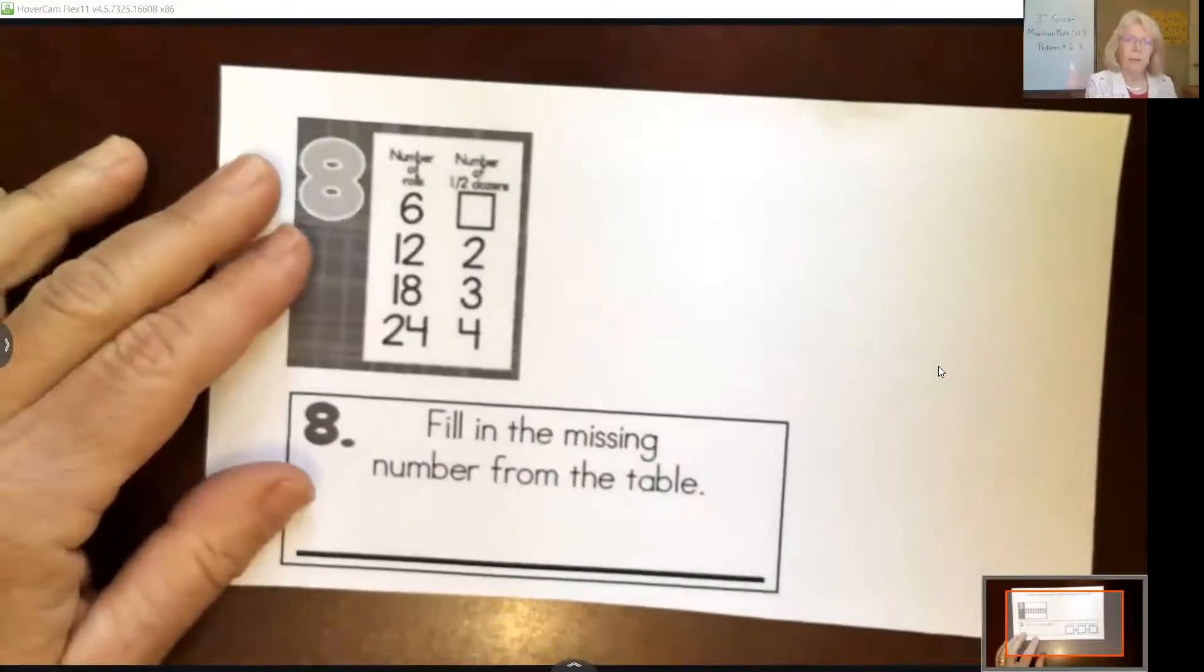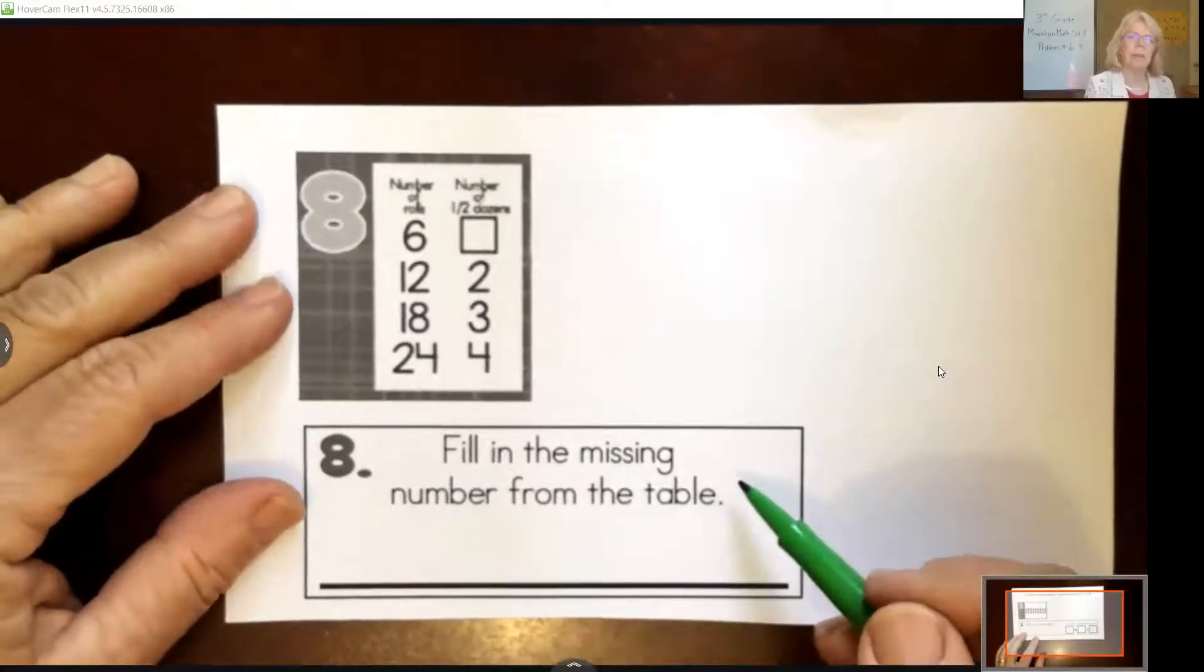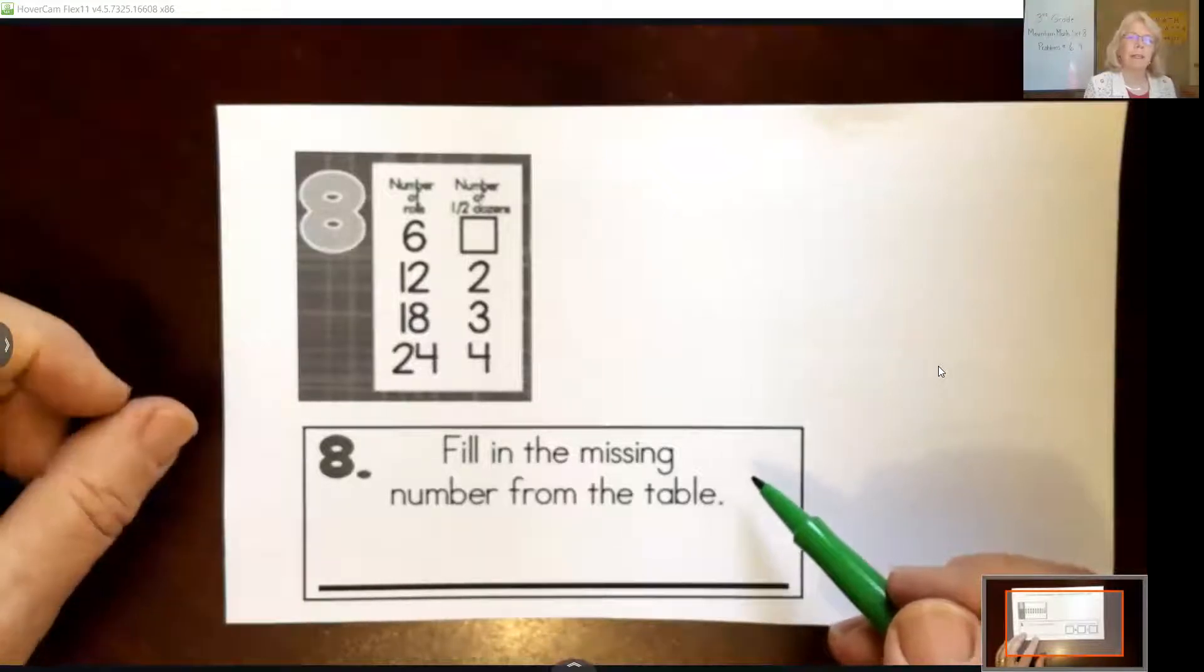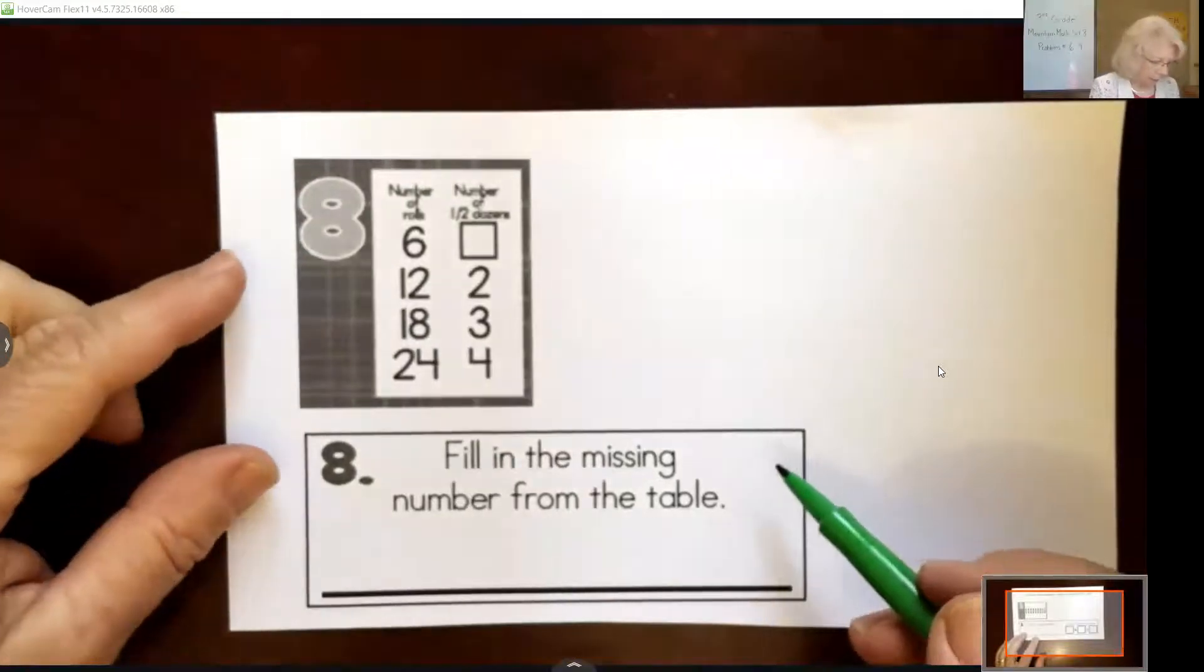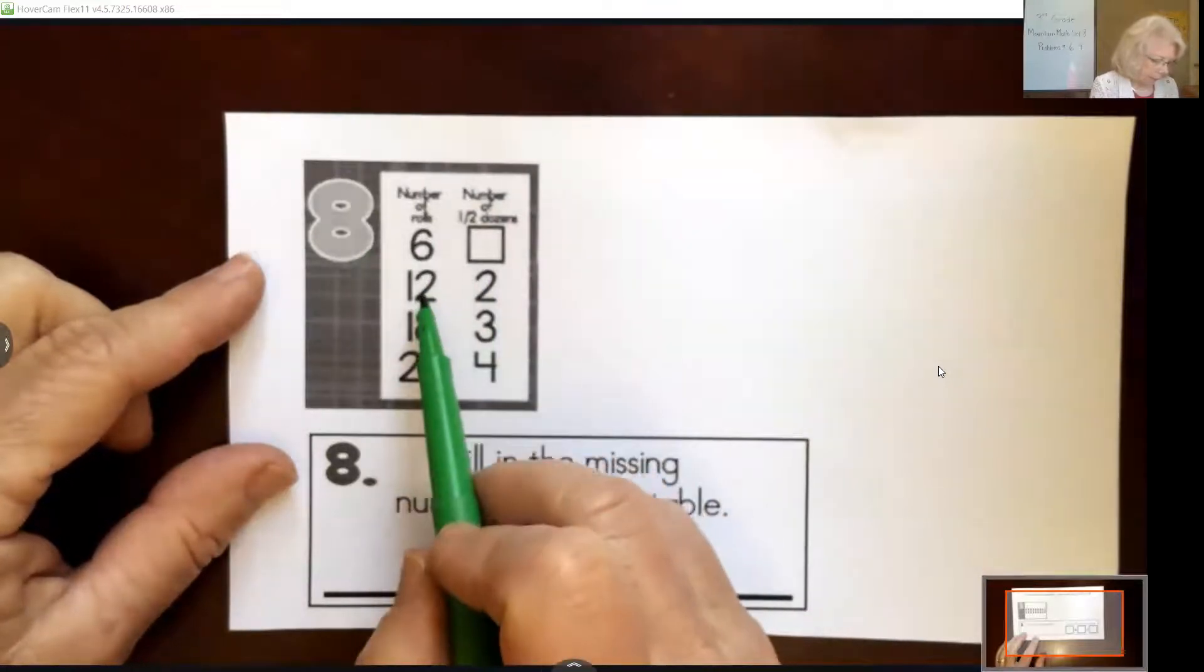Let's go on to number 8. Here's our fill in the missing number from the table, and this is like our in and out box where something happens to this number after it goes in before it comes out.